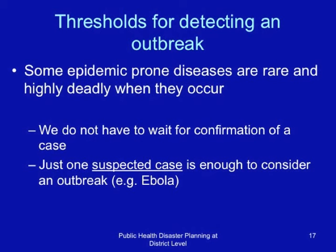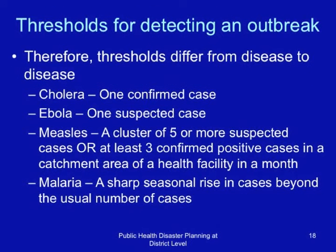Thresholds differ from disease to disease. For cholera, just one confirmed case. For Ebola, one suspected case. For measles, a cluster of five or more suspected cases, or at least three confirmed positive cases in a catchment area of a health facility occurring in one month. For malaria, because it is endemic in many parts of Eastern Africa, an outbreak occurs when there is a sharp seasonal rise in cases beyond the usual number of expected cases.